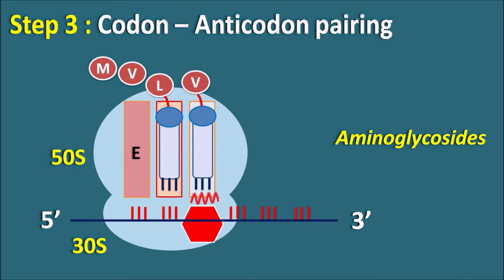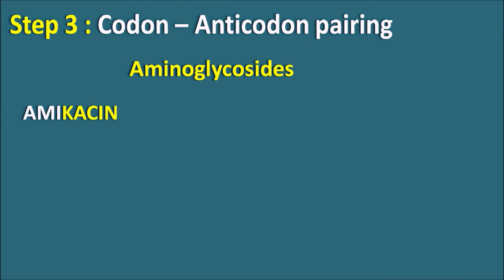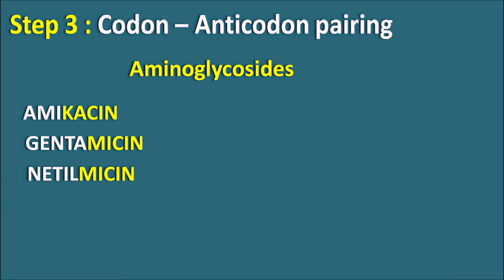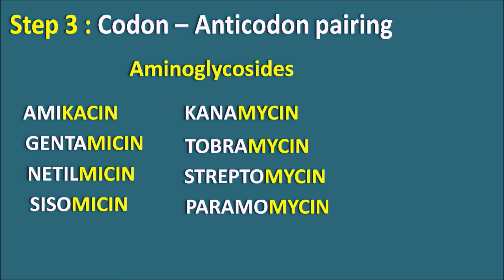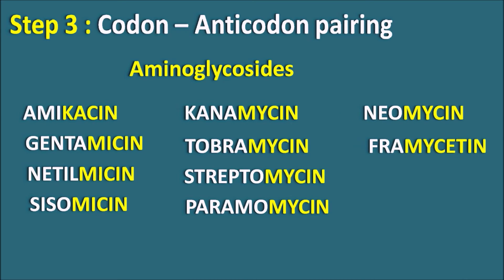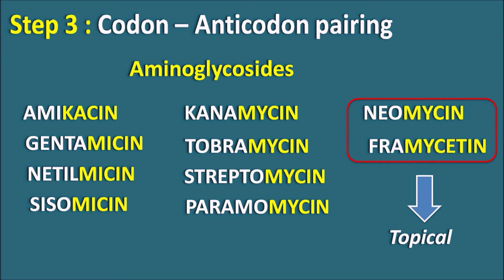Because the amino acid is not recognized, it cannot be retained within the A site and protein synthesis is inhibited. In this way aminoglycosides produce codon-anticodon mispairing. Different types of aminoglycosides include amikacin, gentamicin, netilmicin, sisomicin — having the suffix 'micin' or 'mycin' — as well as kanamycin and neomycin, the latter two particularly useful for topical purposes. All these are aminoglycosides acting by inhibiting codon-anticodon recognition.